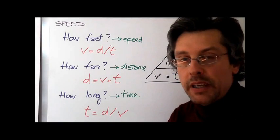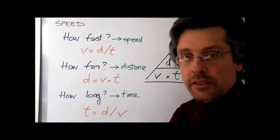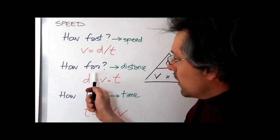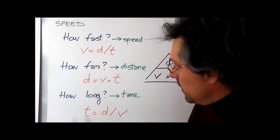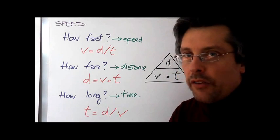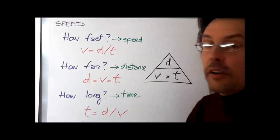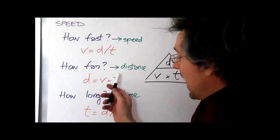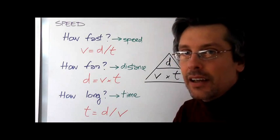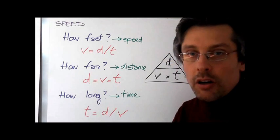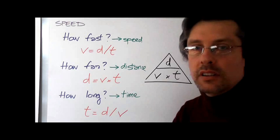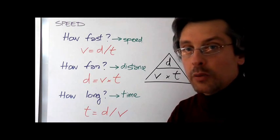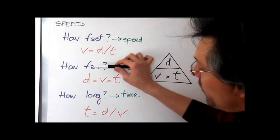In a problem with speed, there are three types of questions which might be asked of you: How fast? How far? And how long? In the first case, we're looking for speed. When we ask you how far, we're asking for distance. And when we're asking how long, we're asking for time. Now, let's see again how we can use the magic triangle to work out the formulas to answer these three questions.